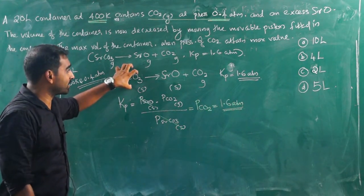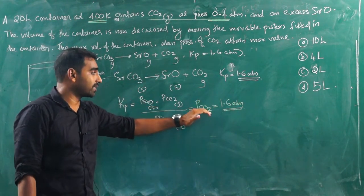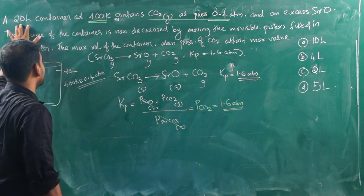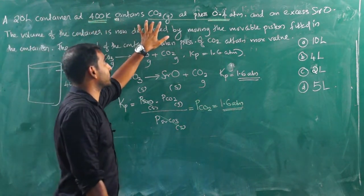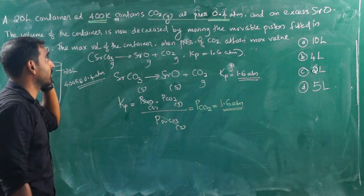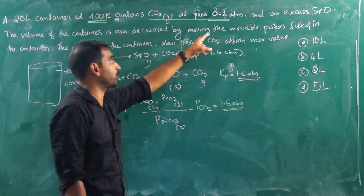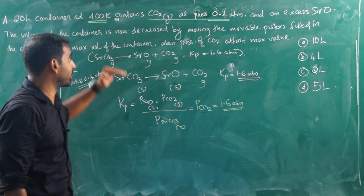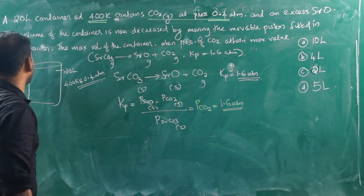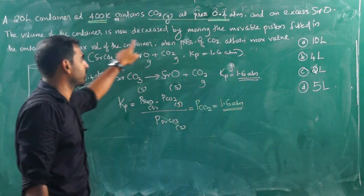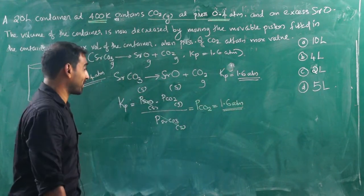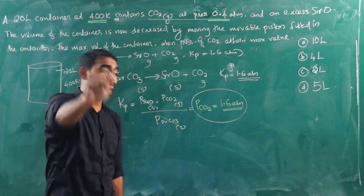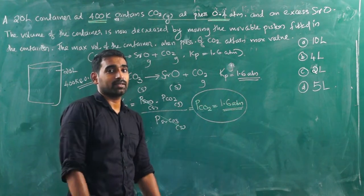When strontium carbonate decomposes, it produces excess CO₂ and the equilibrium pressure of CO₂ is 1.6 ATM. Initially, the 20-liter container at 400 Kelvin has CO₂ at 0.4 ATM with excess SrO. The maximum pressure of CO₂ attained equals 1.6 ATM.